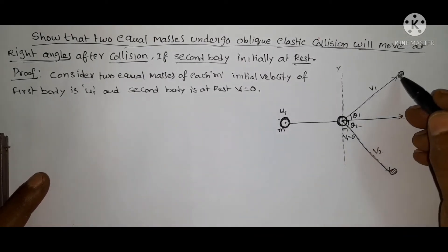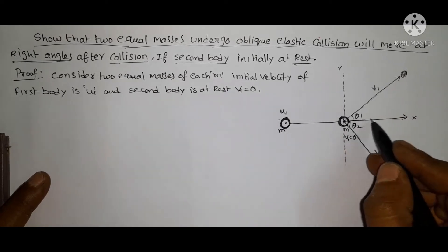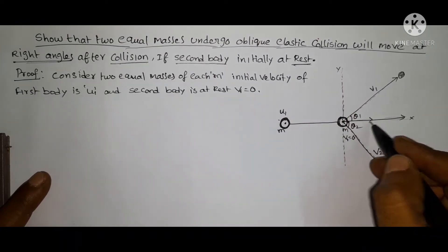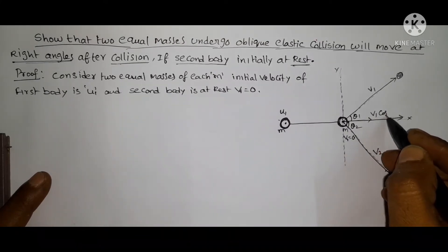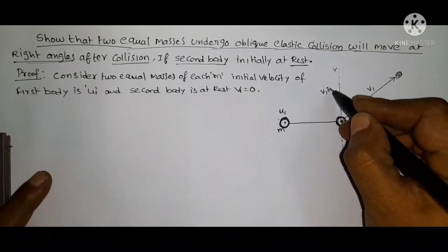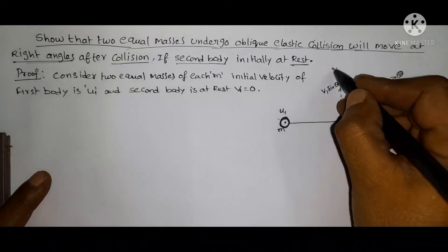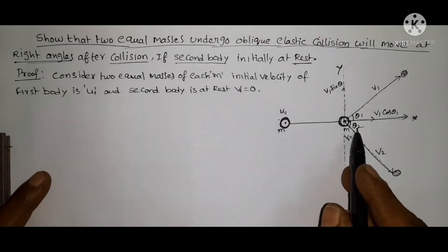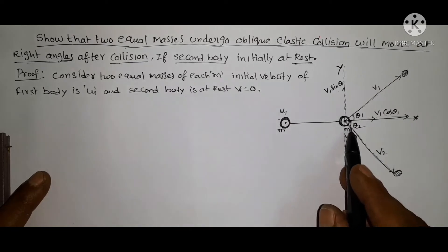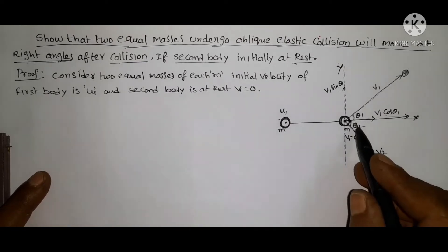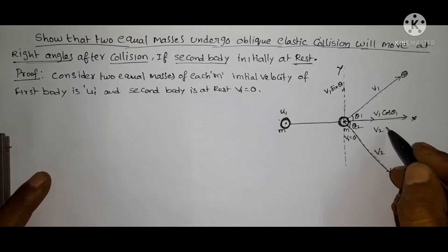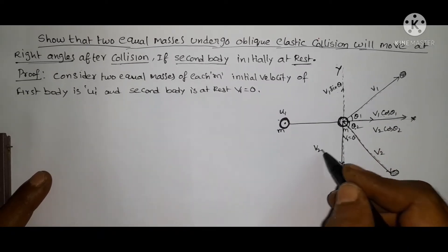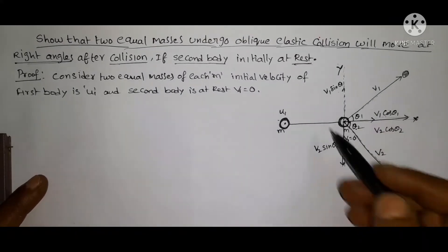If V1 is moving in this direction, it can be resolved into two components: one is the horizontal component and another is the vertical component. From the resolution of vectors, the horizontal component is V1 cos theta 1 and the vertical component is V1 sin theta 1. Similarly, V2 making angle theta 2 with the horizontal is resolved into horizontal component V2 cos theta 2 and vertical component V2 sin theta 2.